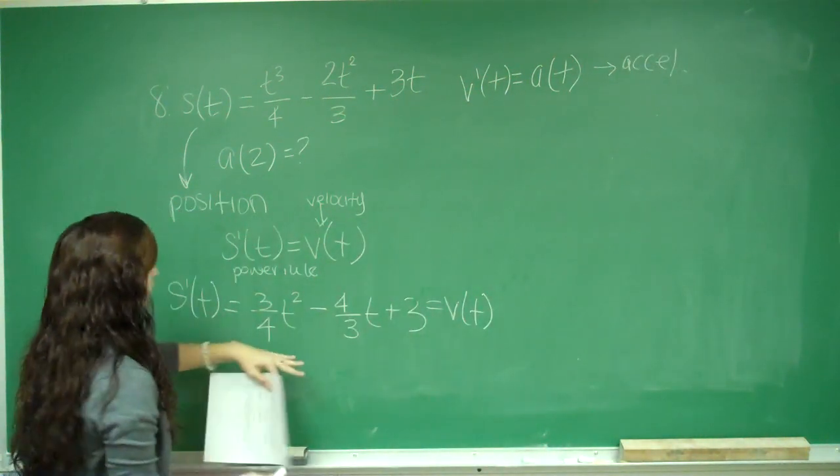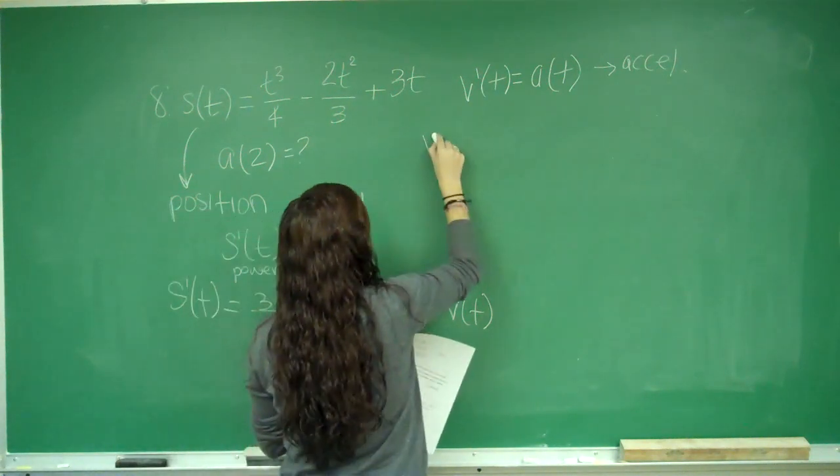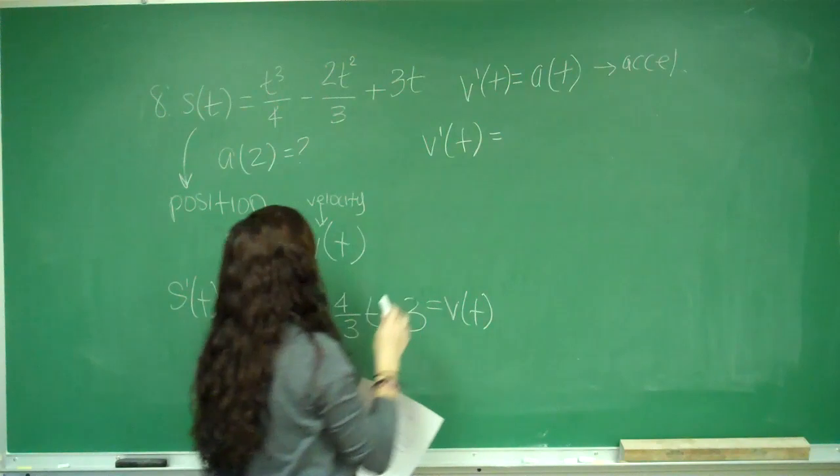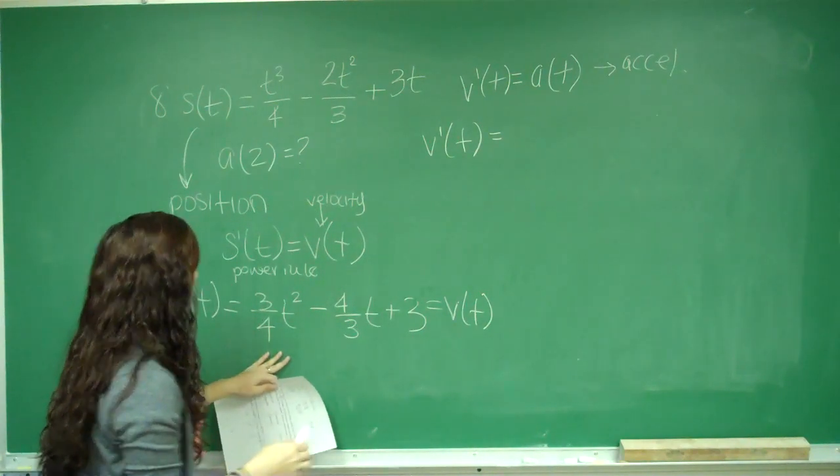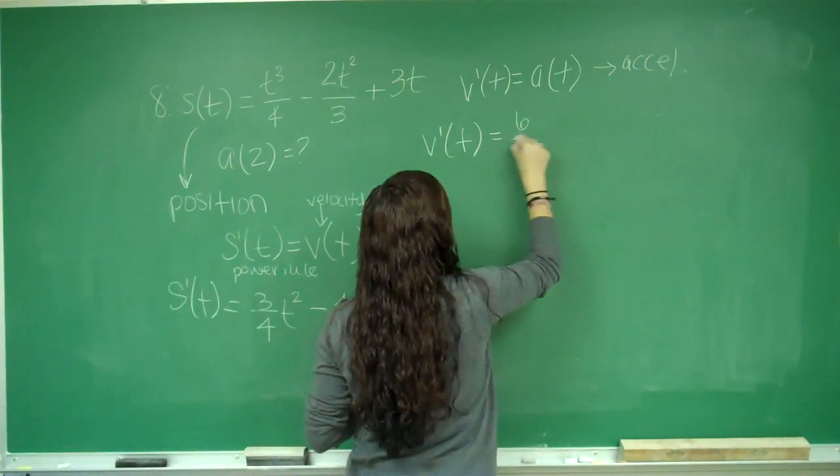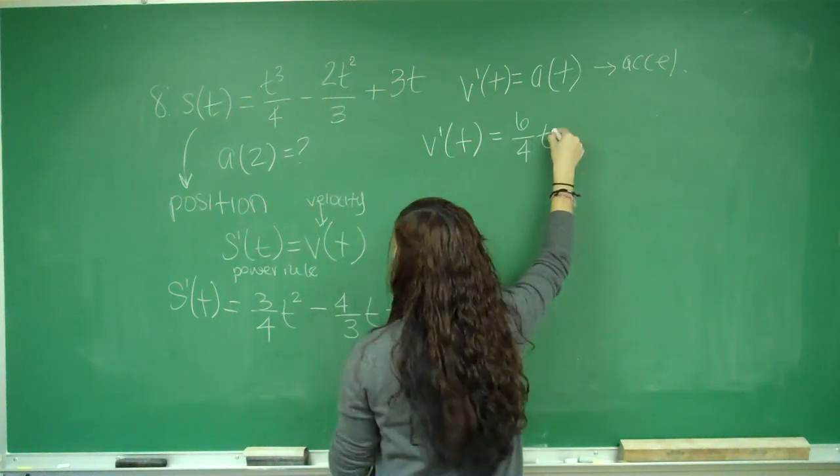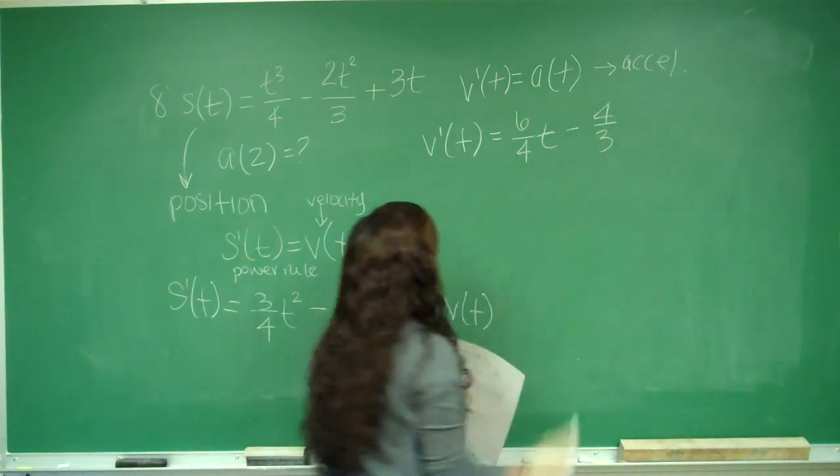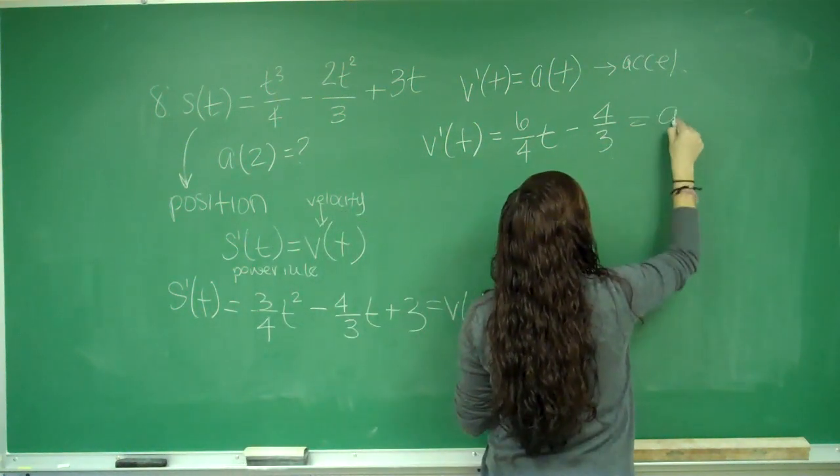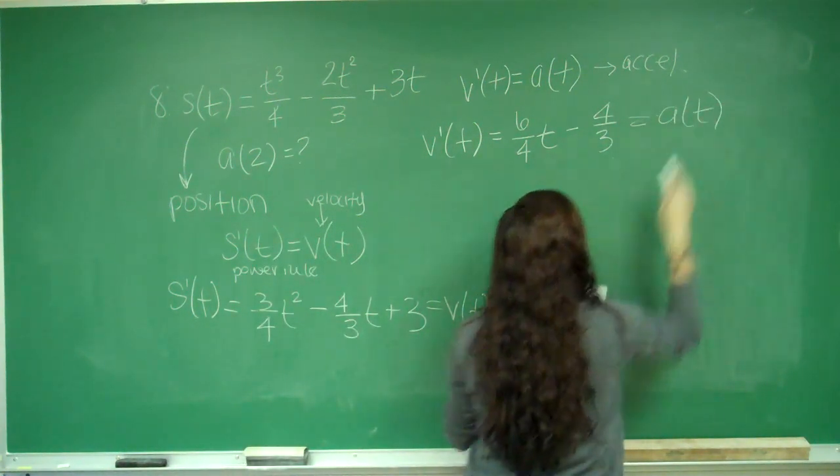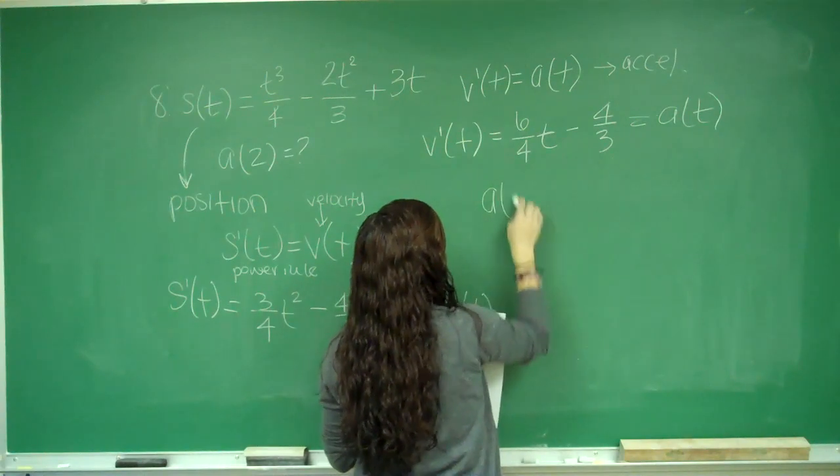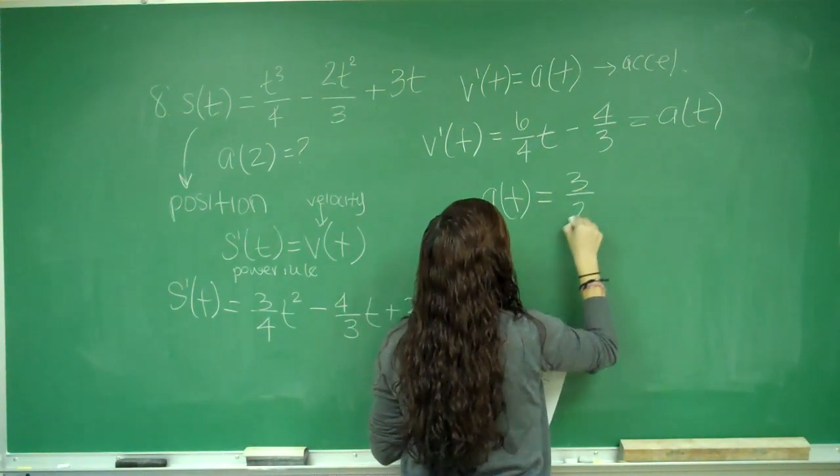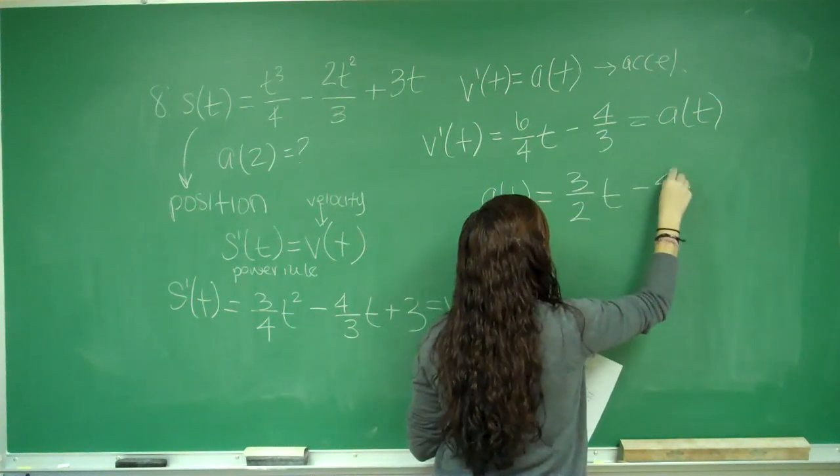I'm going to find the derivative of this, the derivative of v of t. I do power rule again. So I have 6 fourths t minus 4 thirds, and this is equal to a of t. So my new acceleration function is going to be 3 halves t minus 4 thirds.